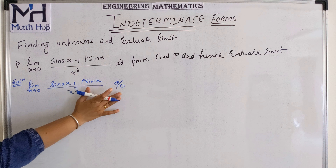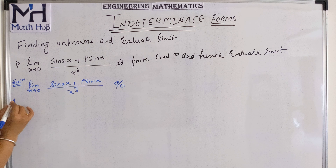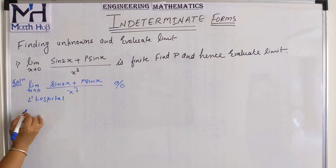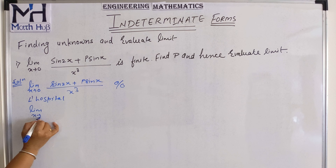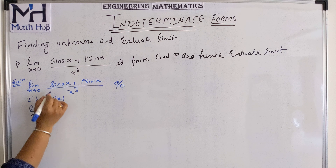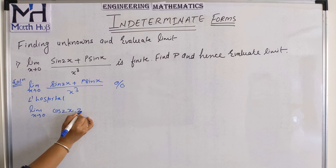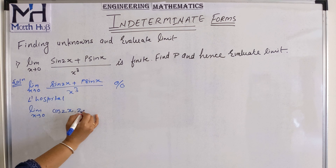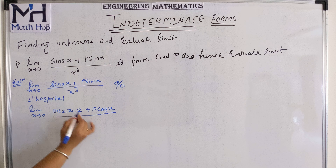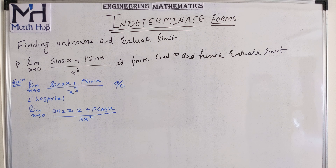When we get 0 by 0 indeterminate form, we apply L'Hospital rule. L'Hospital rule says: differentiate the numerator and differentiate the denominator. So differentiating the numerator: derivative of sin 2x is cos 2x times 2, and derivative of p·sin x is p·cos x. Denominator: differentiation of x cubed is 3x squared.